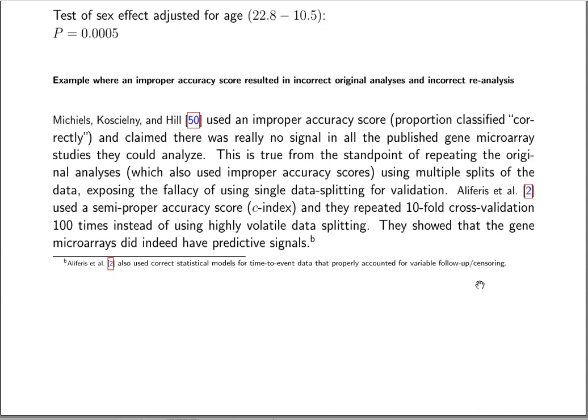There is a paper by Michaels et al. that serves as an example of how using a discontinuous improper accuracy score can give a false conclusion in a certain line of research. The paper was important because it showed that up until that point in time, analyses commonly done on gene microarray data were yielding publications and padding CVs, but the results were really unlikely to be true and unlikely to validate.